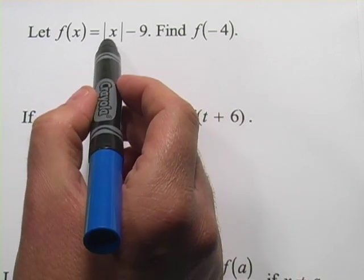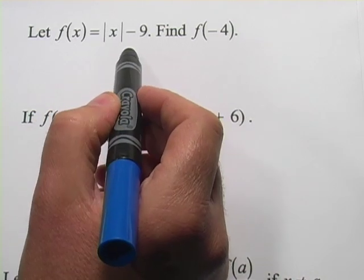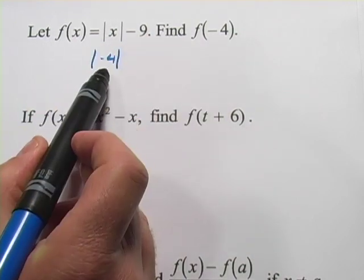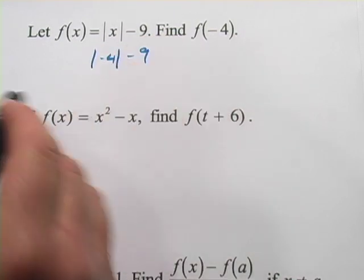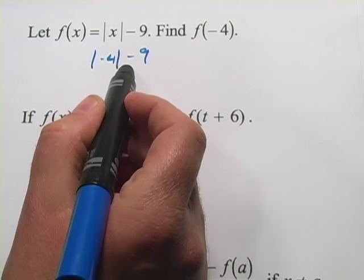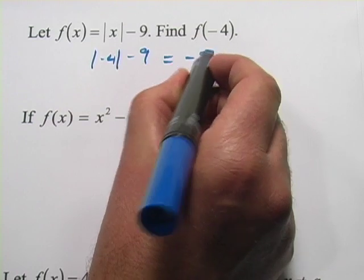And in this case, the function is the absolute value of x minus 9. So I would just plug in negative 4 in place of x, and then evaluate it. Well, the absolute value of negative 4 is positive 4, and then minus 9 is going to be negative 5.